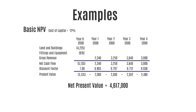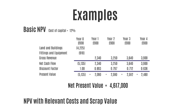That's a basic NPV. Let's step it up a level and, using the same Buzzing Batteries example, add in additional factors to demonstrate other concepts you'll need to be familiar with when completing net present value calculations — specifically relevant costs and scrap value. Relevant costs are those costs which will only change as a result of a decision being made, and scrap value is just the value of an asset at the end of its useful life.